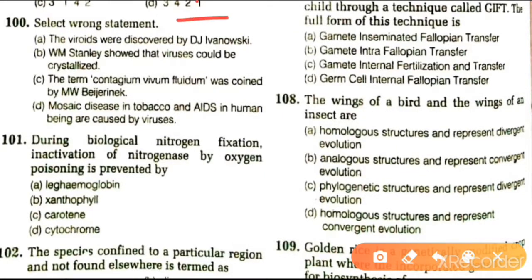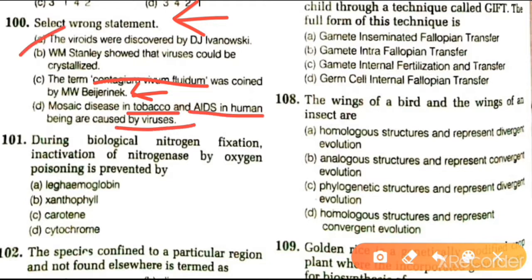Next question: select the wrong statement. Options include viroids were discovered by D.J. Ivanowski; W.M. Stanley showed viruses could be crystallized; the term contagium vivum fluidum was coined by M.W. Beijerinck. The first option is wrong because viroids were discovered by T.O. Diener, and D.J. Ivanowski discovered viruses in 1892.